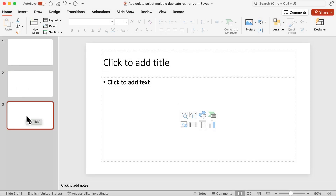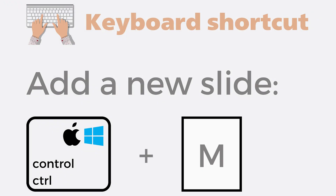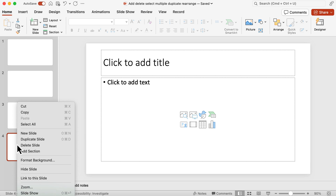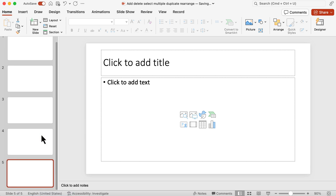If you are into keyboard shortcuts, there's a keyboard shortcut for adding a new slide, and that is Ctrl+M. So if I hold Ctrl+M on my keyboard, I have slide 4. I can also right-click on a slide in the slide panel to add a new slide. Let's right-click on slide 4, and choosing New Slide, I get slide 5.